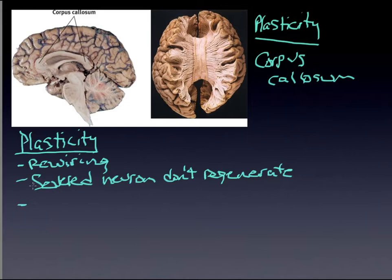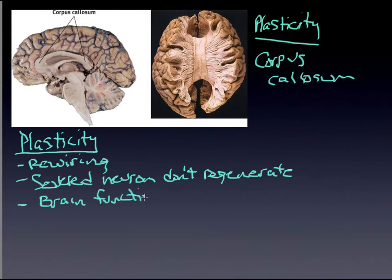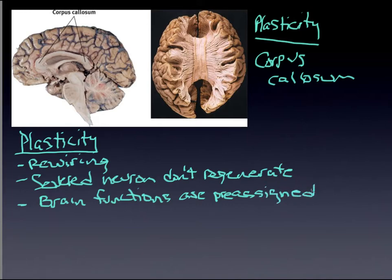And secondly, some brain functions are pre-assigned. Brain functions, which we oftentimes assess in neuropsychology, are pre-assigned. That is key to understand, because when certain areas don't work, we know exactly what area to look at.